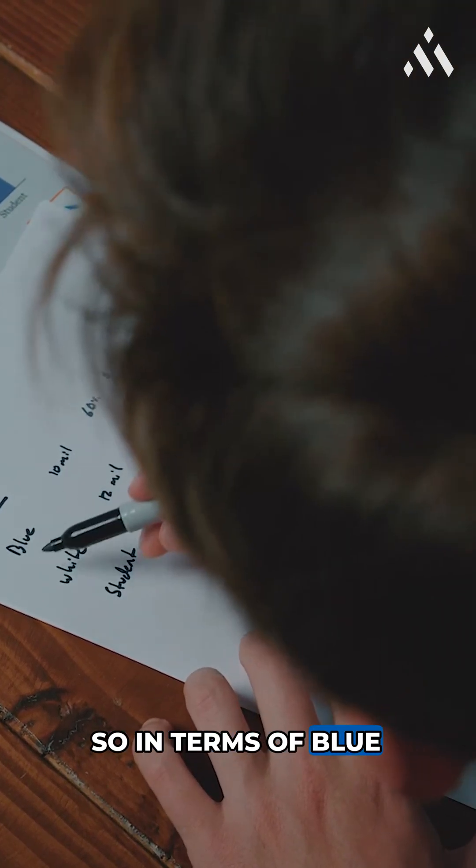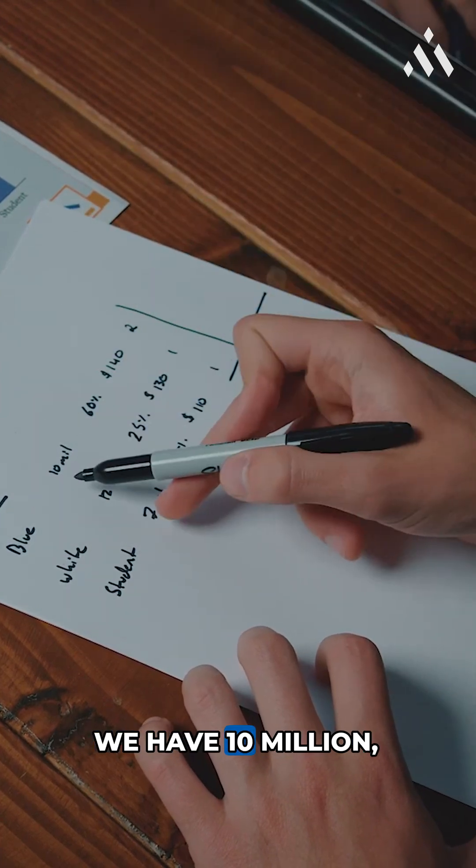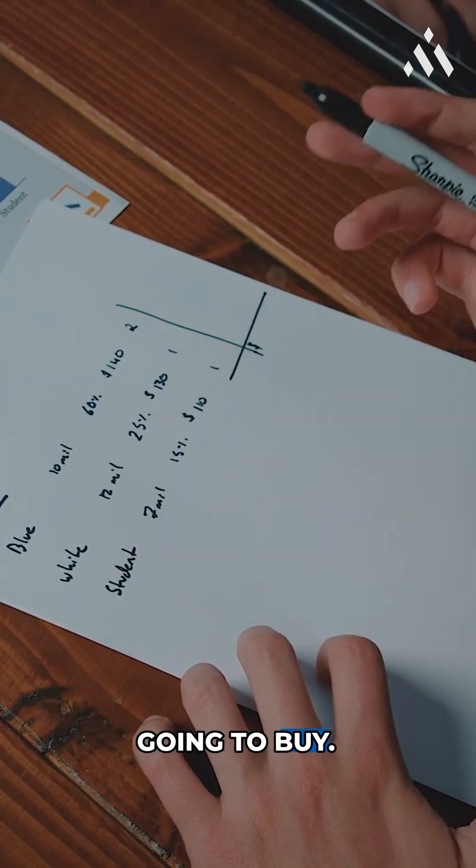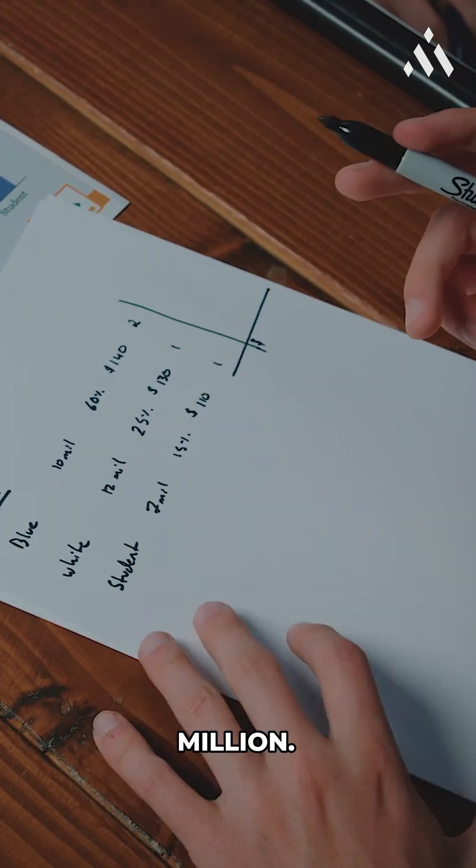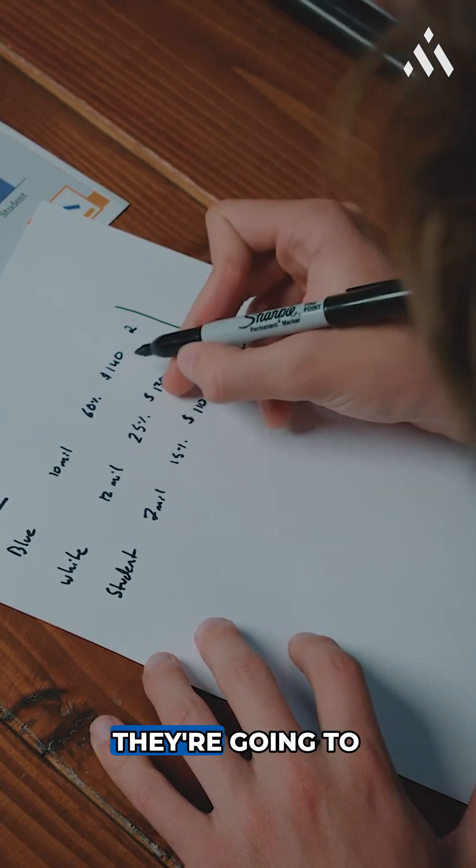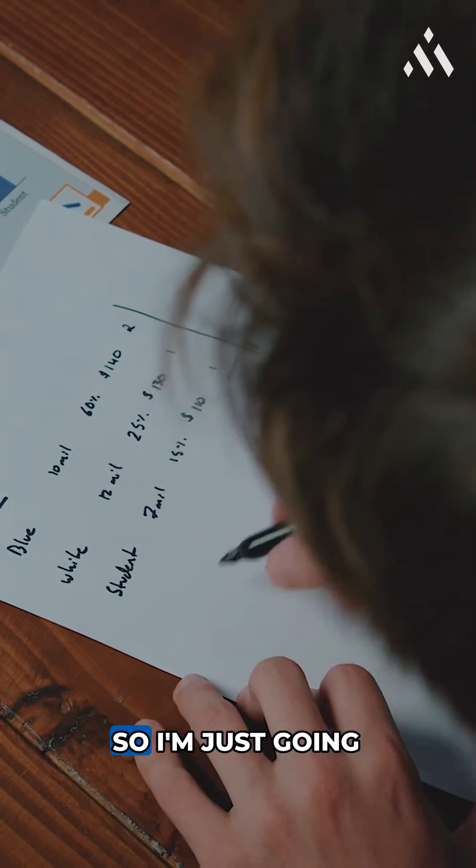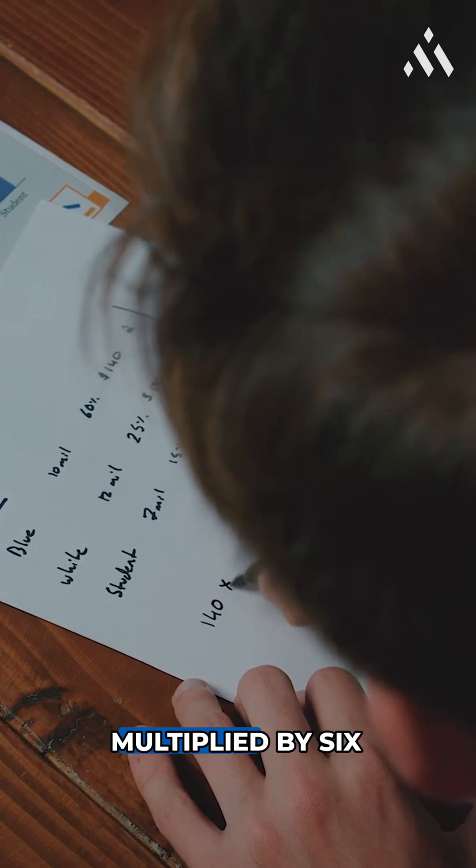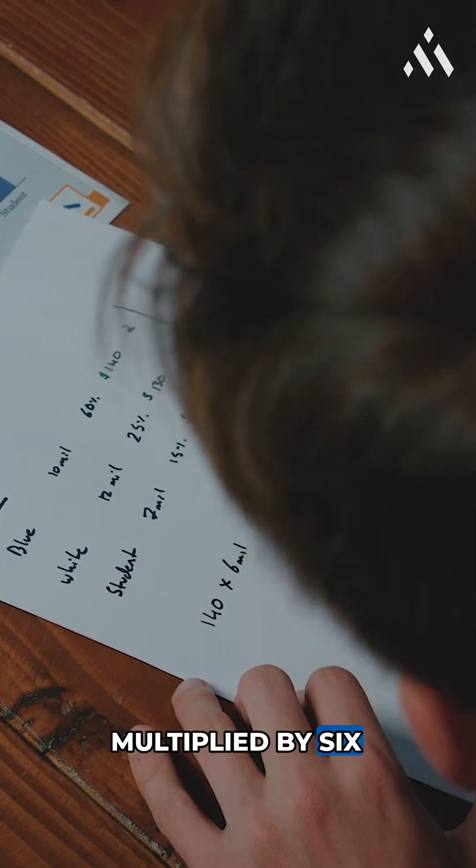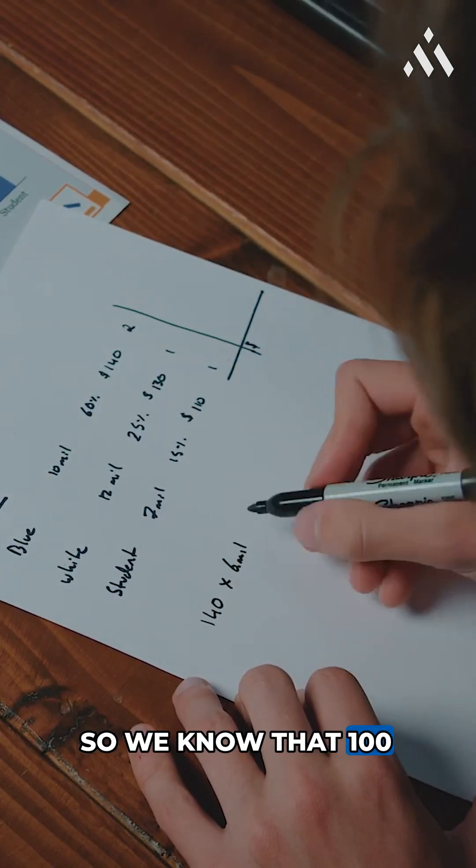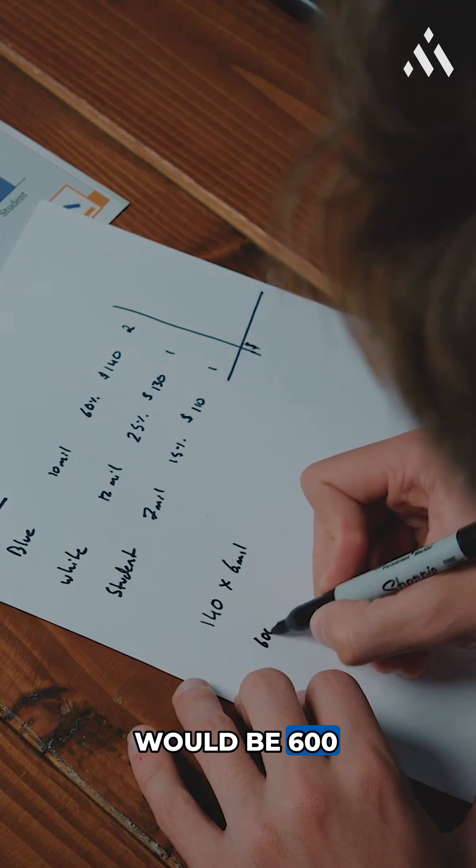So in terms of blue collar work boots, we have $10 million. 60% of them are going to buy work boots. So that's $6 million. We also know that they're going to pay $140. So I'm just going to come down here and do $140 multiplied by $6 million. So we know that $100 by $6 million would be $600 million.